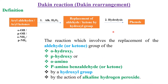In words, it is a reaction which involves the replacement of the aldehyde or ketone group of ortho-hydroxy or para-hydroxy or ortho-amino or para-amino aryl aldehyde or ketone by a hydroxy group by the action of alkaline hydrogen peroxide. The starting material is aryl aldehydes or ketones having hydroxy at ortho or para, or amino at ortho or para. The final product is phenol, and the reagent used is alkaline hydrogen peroxide.